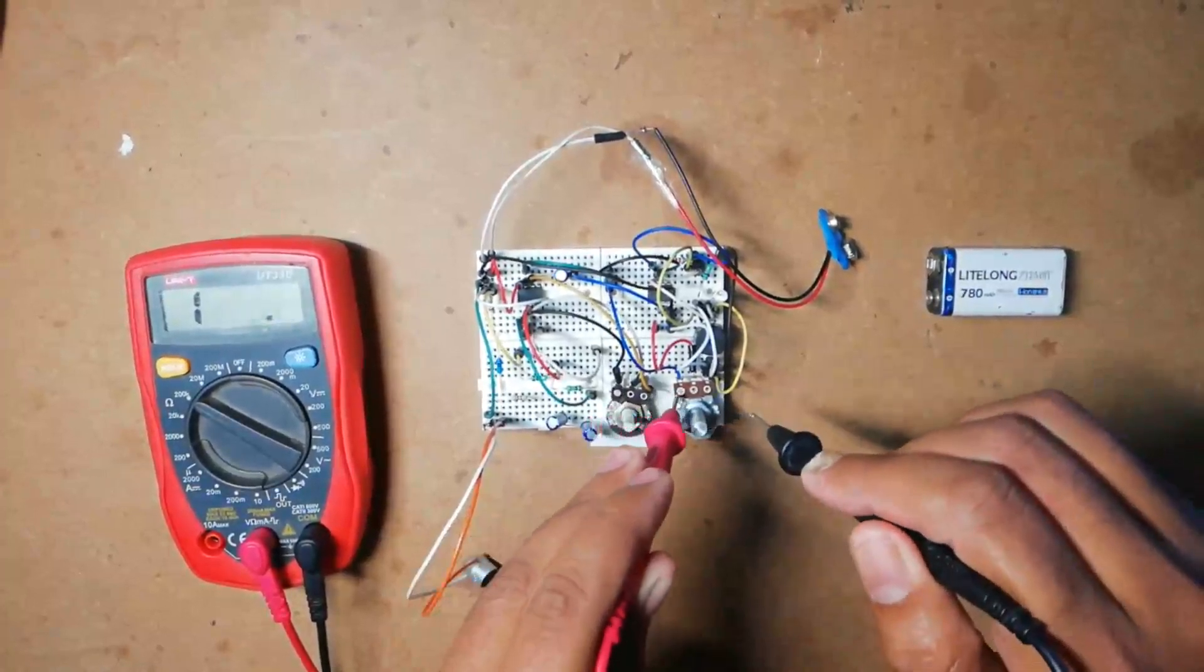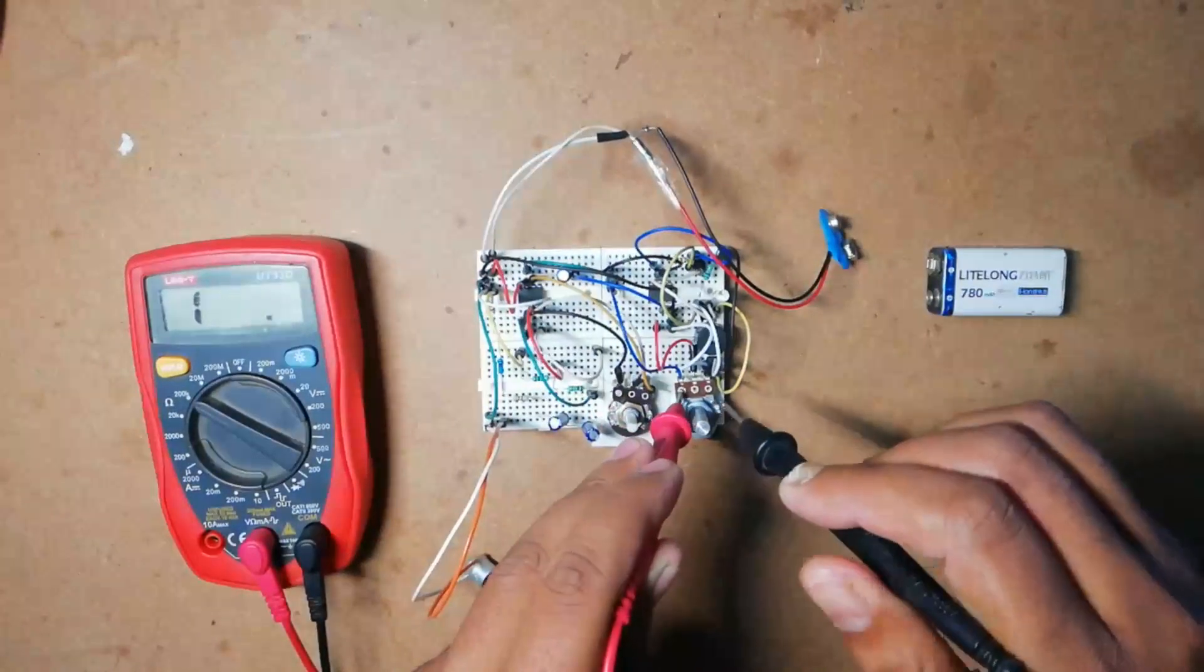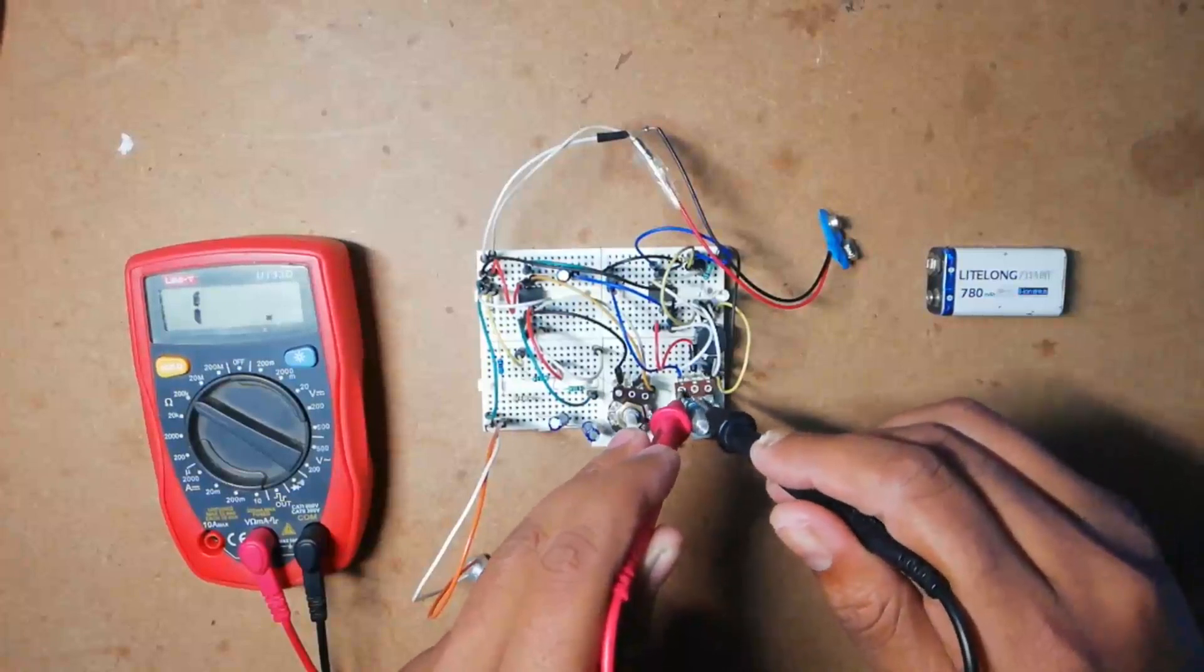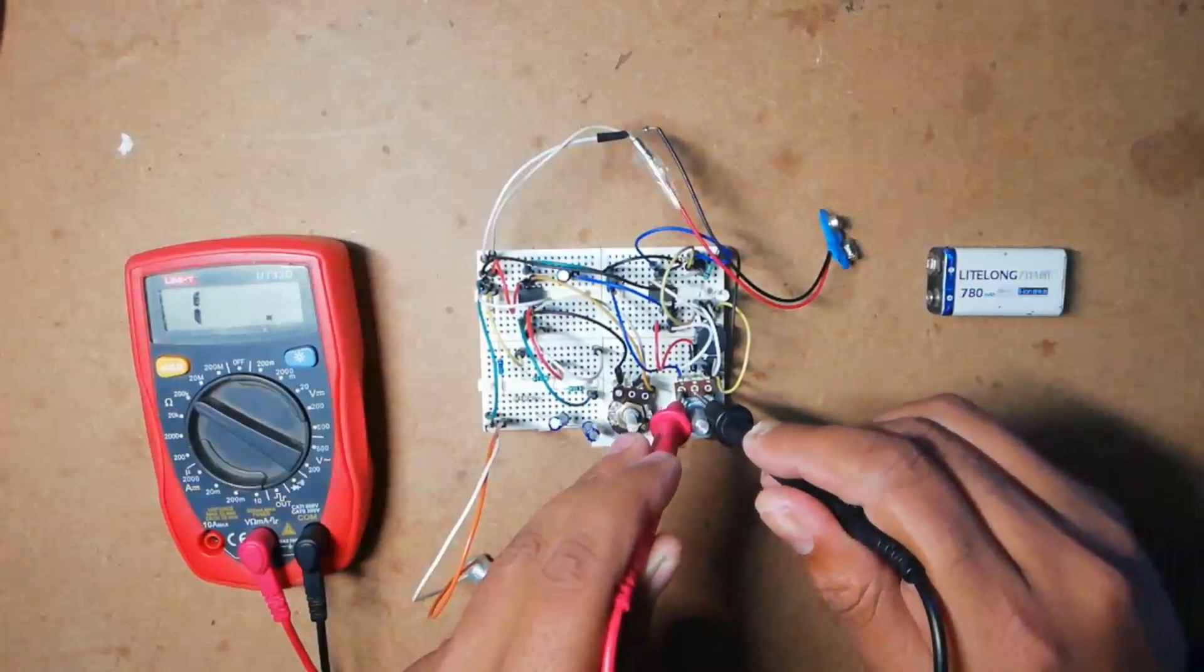Similarly, for variable resistor BR2, the resistance between fixed terminal and wiper is